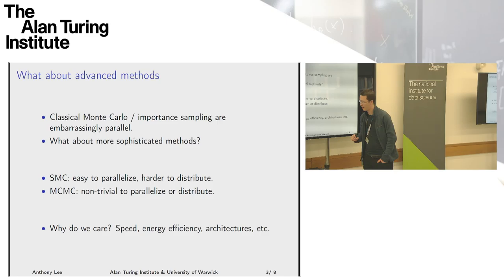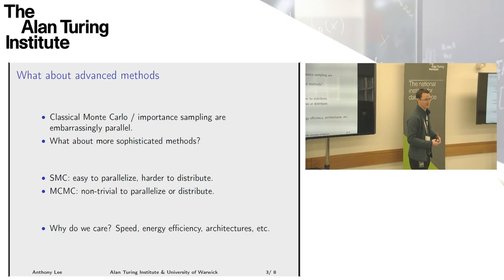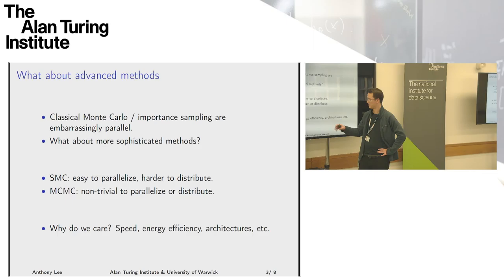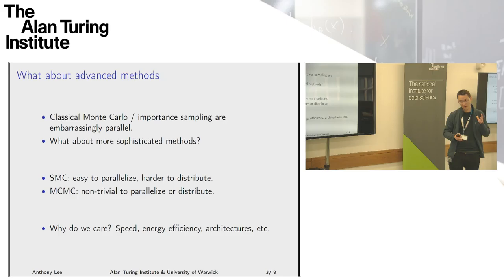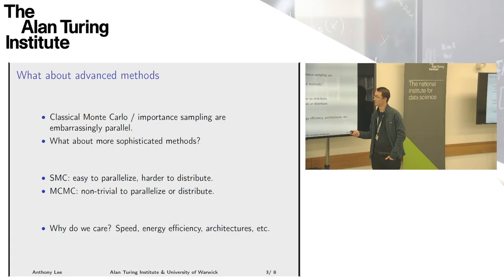Why do we care? Sometimes we care because of speed. Nowadays when you buy a workstation, it's going to have a CPU or GPU with many cores — not one super-fast core. There are also concerns of energy efficiency and taking advantage of the architectures coming out today. We care about algorithms that are parallel and can be distributed for a variety of reasons.